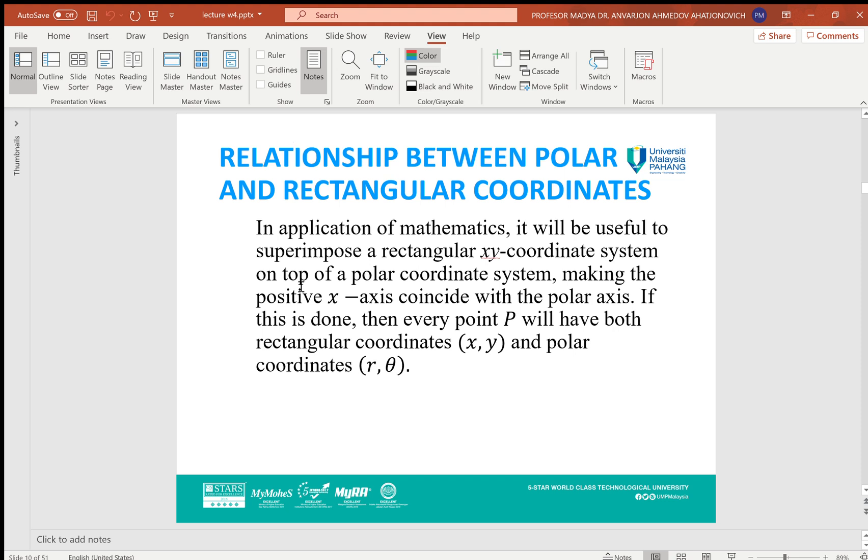Relationship between polar and rectangular coordinates. In application of mathematics, it will be useful to superimpose a rectangular XY coordinate system on top of polar coordinate systems, making the positive x-axis coincide with the polar axis. If this is done, then every point P will have both rectangular coordinates (x,y) and polar coordinates (r, θ).